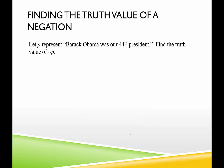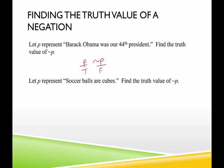'Barack Obama was our 44th president' is a true statement; therefore, its negation is false. P represents 'soccer balls are cubes' — that is false — and not P represents 'soccer balls are not cubes.' Since P is false, the negation not P is true. This has been an introduction to truth values and truth tables. Thank you for stopping by.